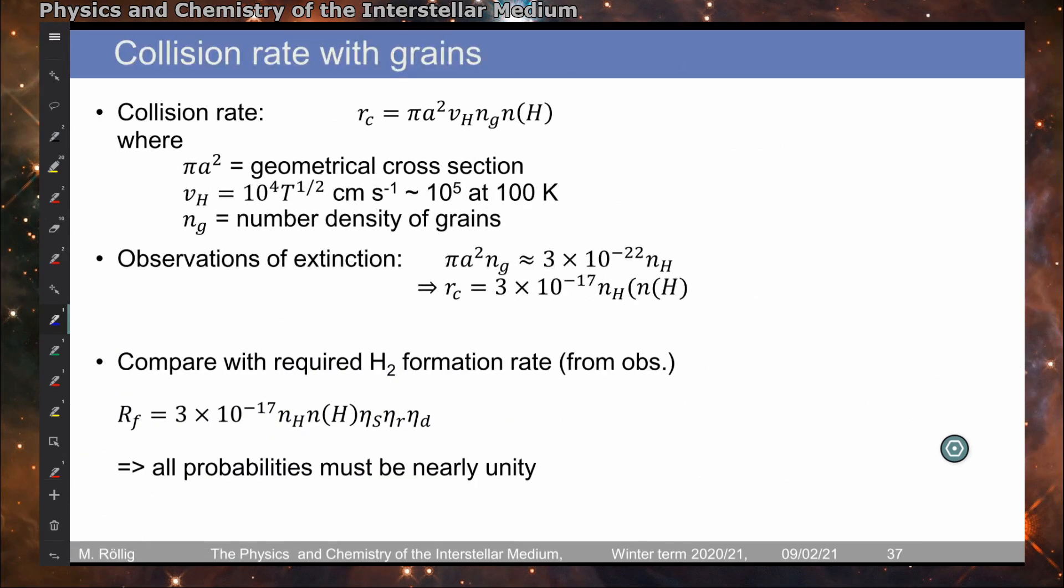Now when we look at the timescales, we can compute the collision rate with grain particles that depends on the cross section of the grain size, the velocity of the hydrogen atoms, and the densities. Putting in typical numbers, we find that the collision rate needs to be in the order of 3 × 10^-17. So this is, at typical densities and velocities, the collision rates as a function of the densities.